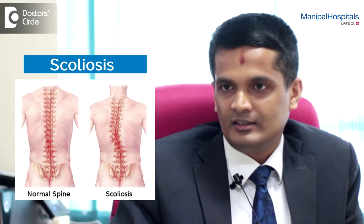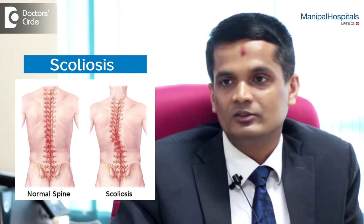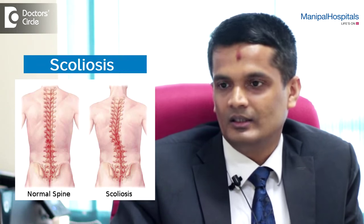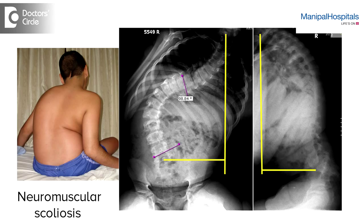It is commonly seen in children. When there is no specific cause, it is called idiopathic, which is the commonest type, constituting about 80% of scoliosis. It can also be present because of birth defects in the vertebrae, called congenital scoliosis. Or it may be neuromuscular — in patients with nerve or muscle problems developing paralysis of the hands, legs, and pelvic muscles — causing a bend in the back called neuromuscular scoliosis.